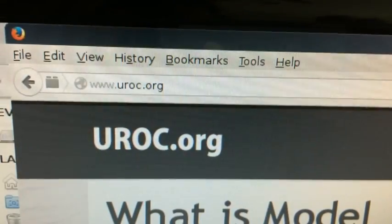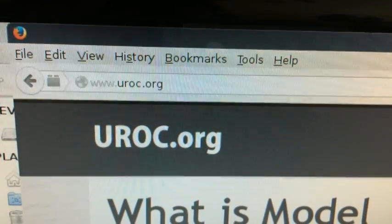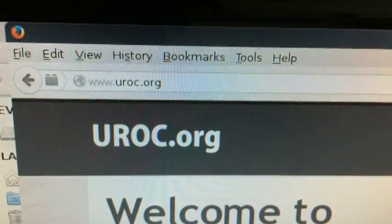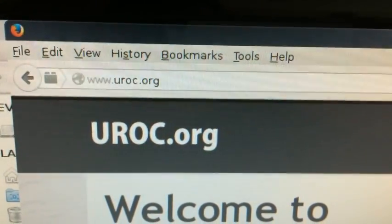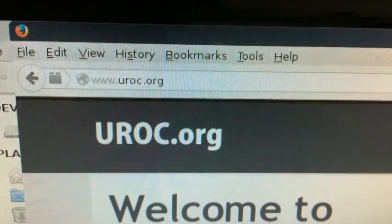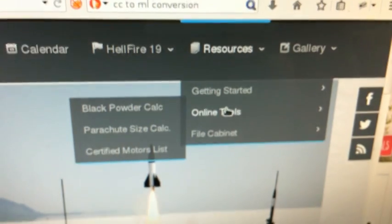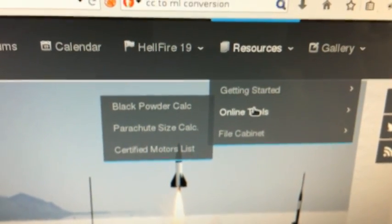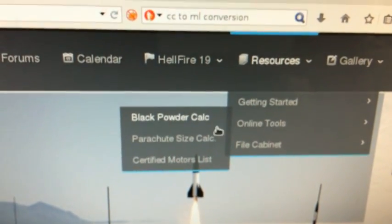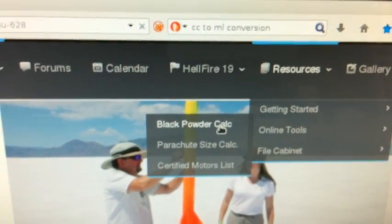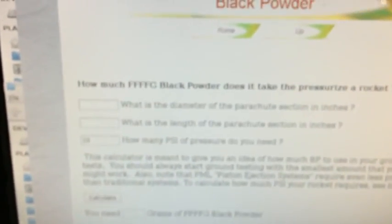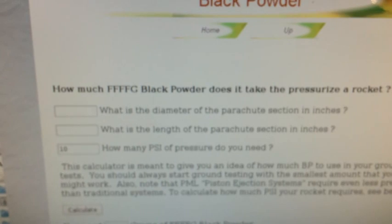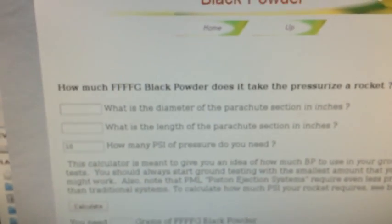The next part of this task is to find out how much black powder you need for the area of deployment you're going to use. In my case I go to uroc.org and under their resources you'll see some online tools and I go to black powder calc and they've got a great black powder calculator here and you tell what the diameter of your parachute section is in inches. In my case it's four.